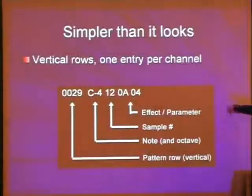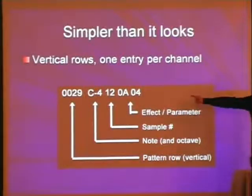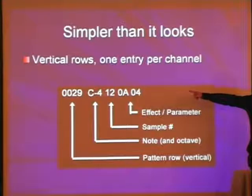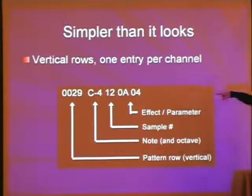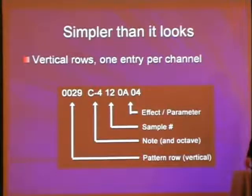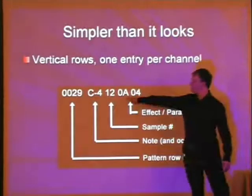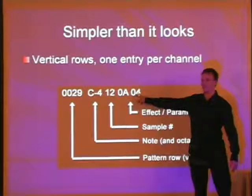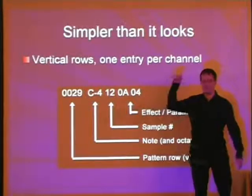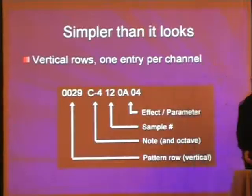It's just the row number, the note — in this case C-4, where C is the note and four is the octave. You also have the sample number, say 12. Samples are just a linear list. And then you have an effect. In this case, OA is the effect, which would be a volume slide. And then four is the parameter, which if I remember correctly in the olden days would be volume slide down by an amount of four.